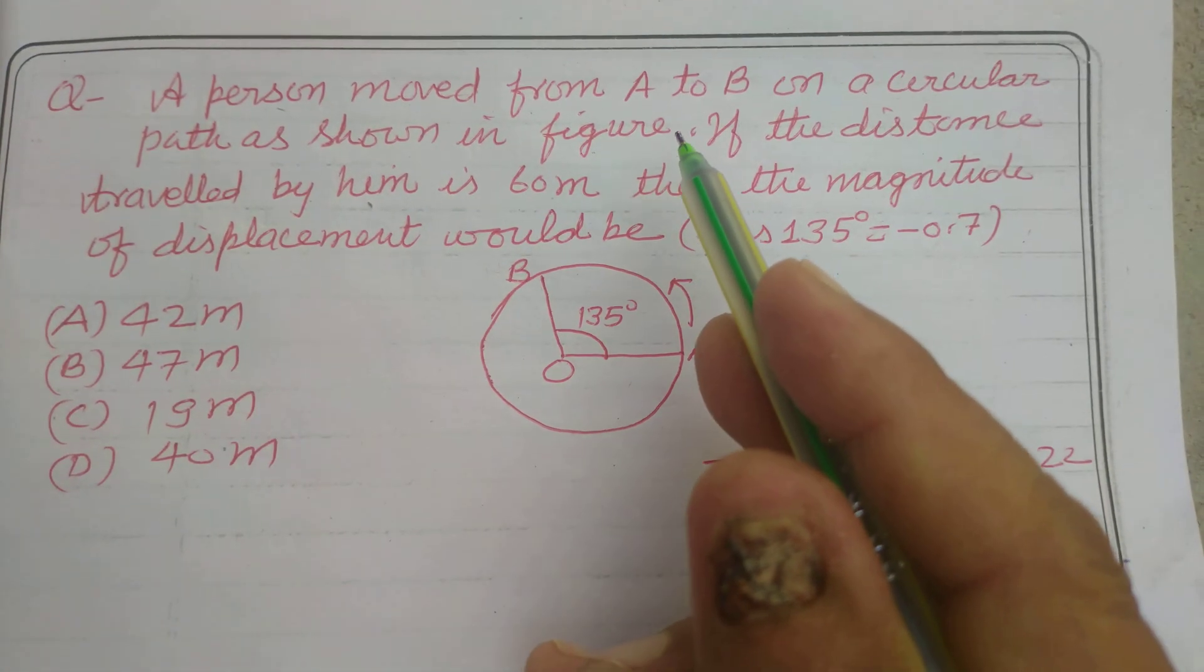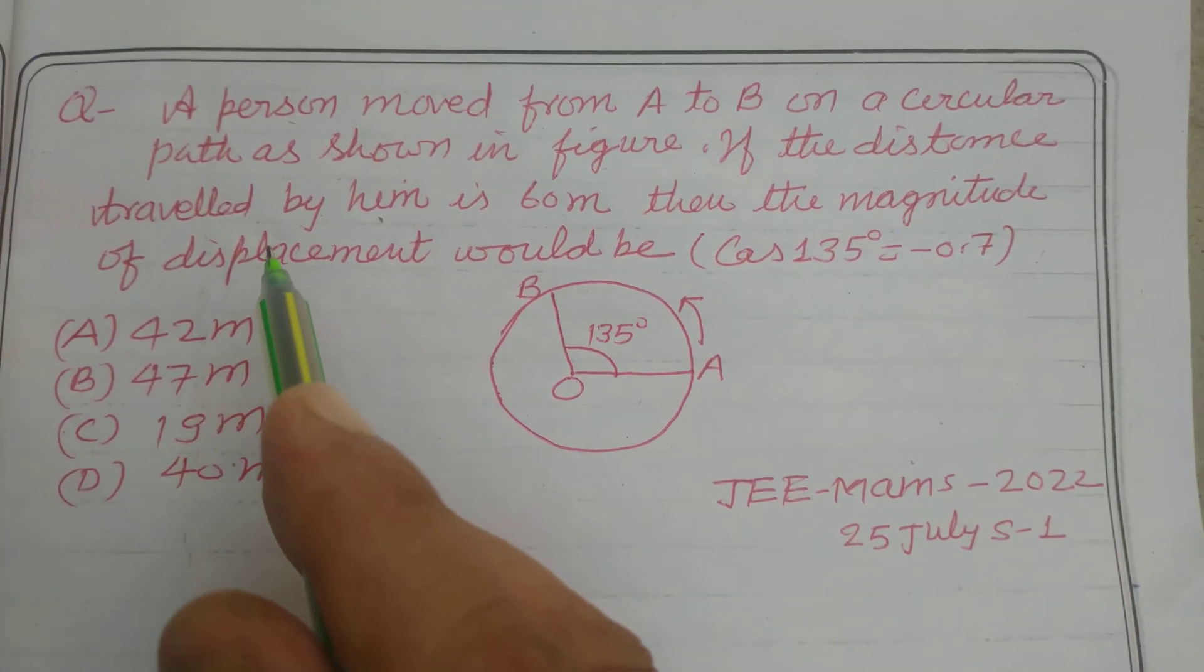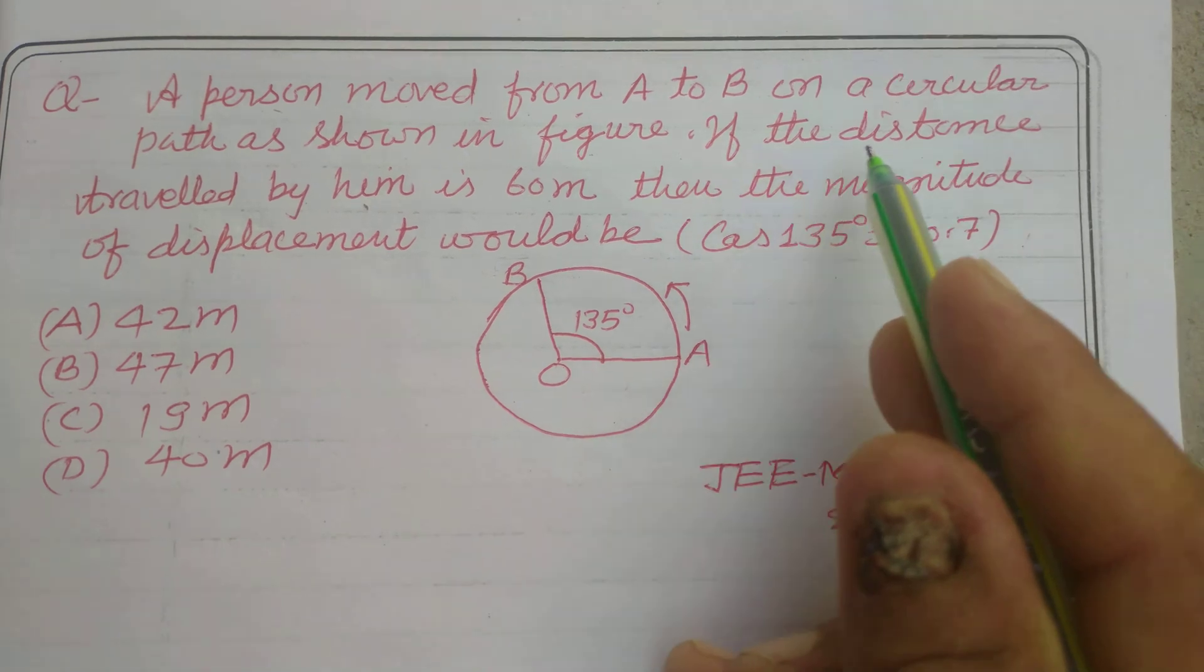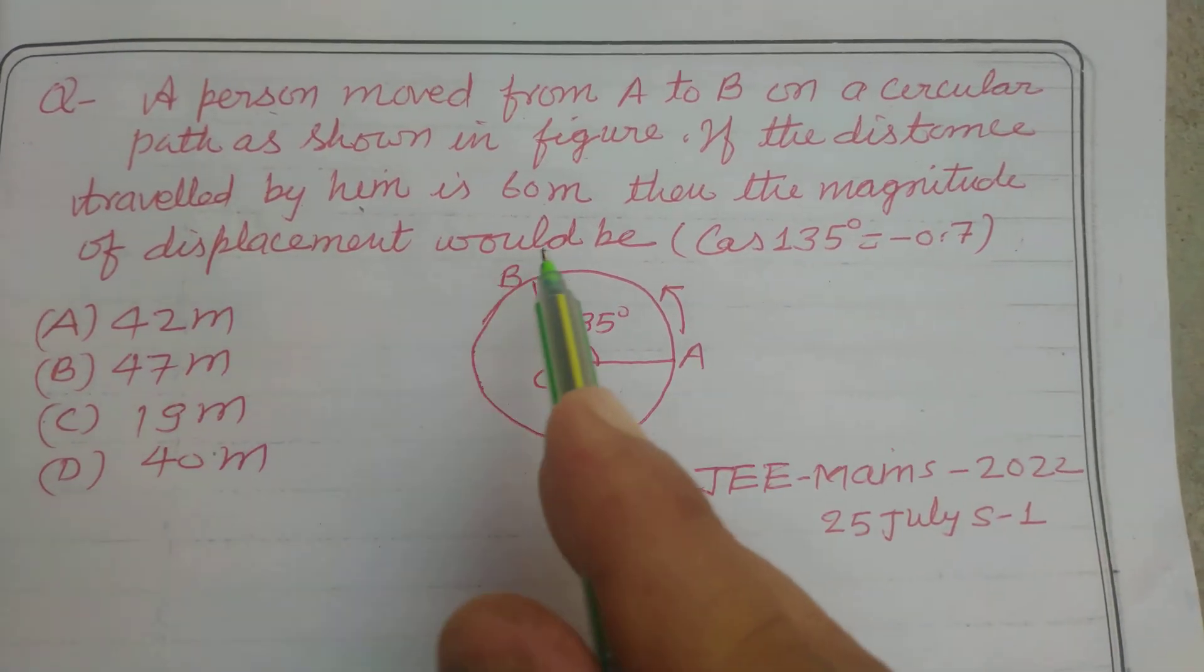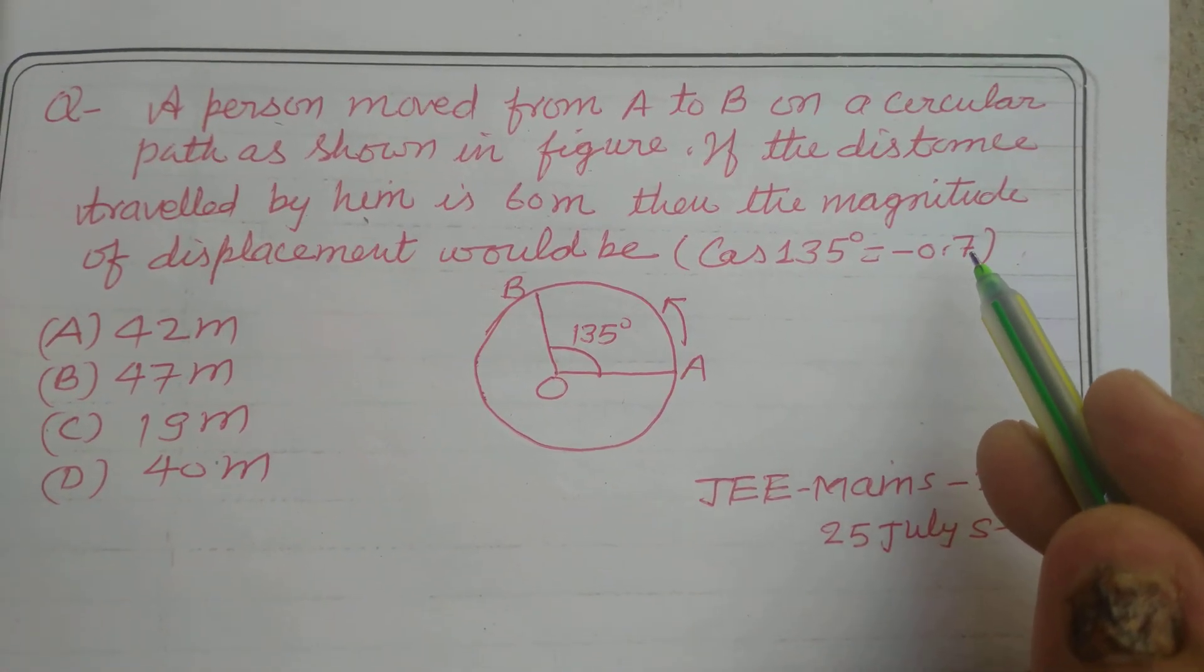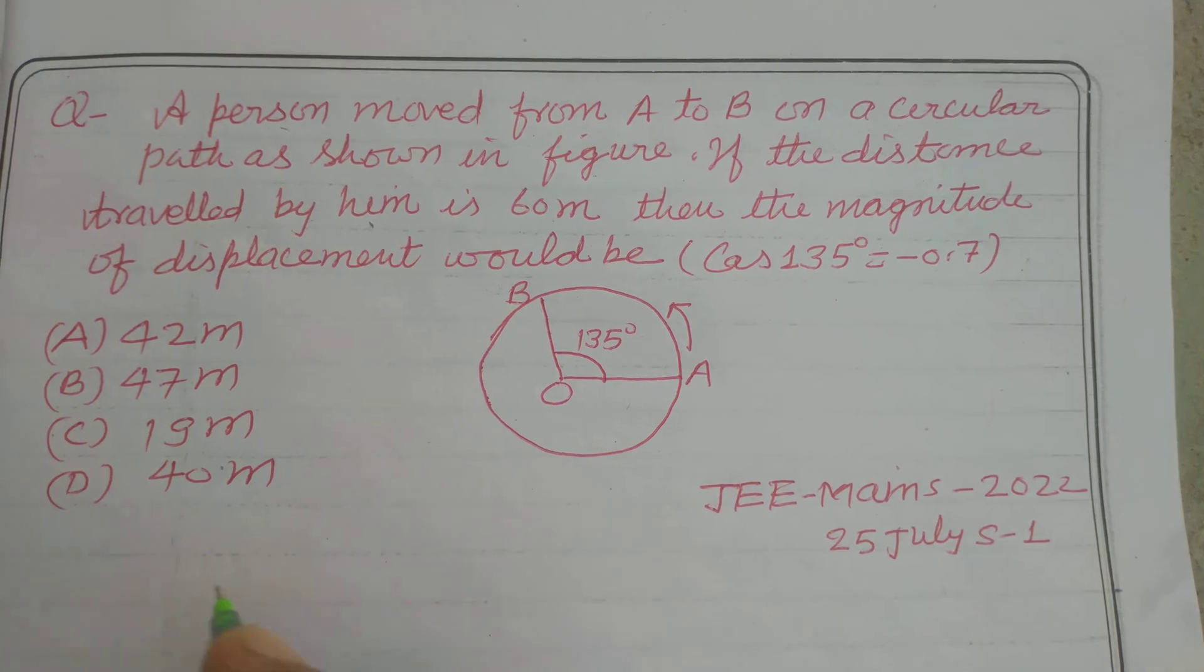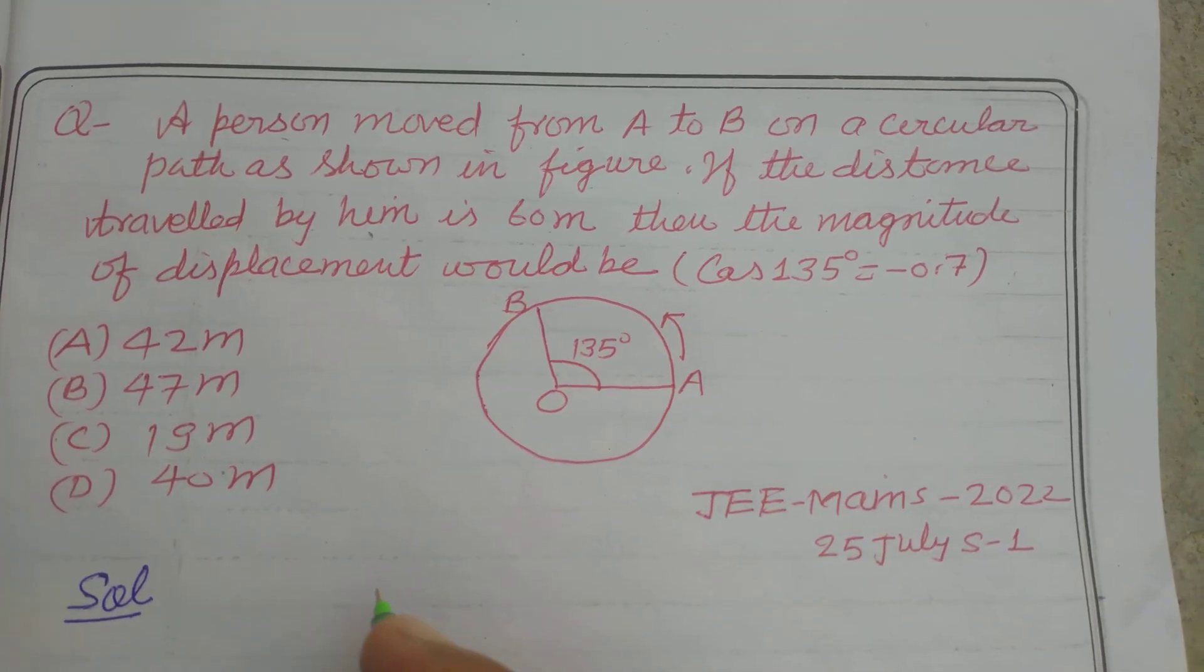A person moved from A to B on a circular path as shown in figure. If the distance travelled by him is 60 meter then the magnitude of displacement would be, cos 135 is given minus 0.7. So this is the circle and distance from A to B is given to us.